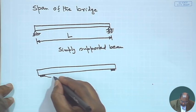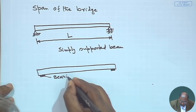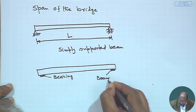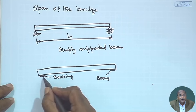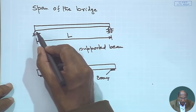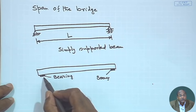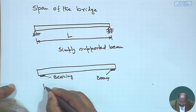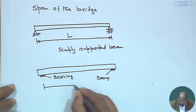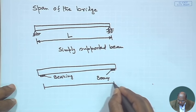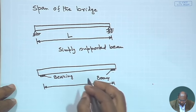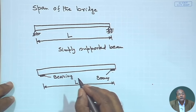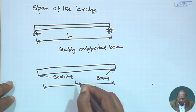We have a bearing on one side and another bearing on the other side. Obviously, this bearing will have certain dimensions. Comparing the idealized figure with the actual physical reality, it is wise to measure the dimension from the centre line of one bearing to the centre line of the other bearing. So we can consider this as L or effective span, on the basis of which we shall calculate bending moment and shear force.